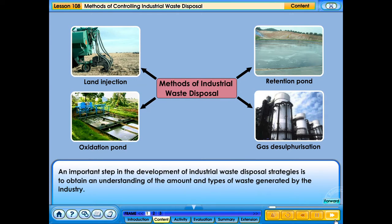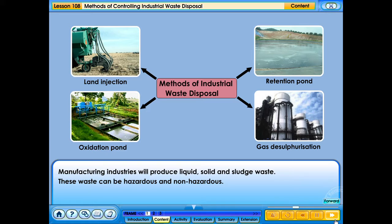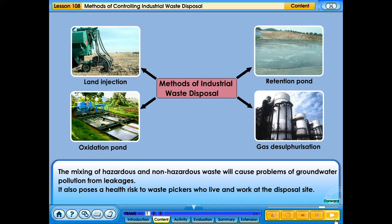An important step in the development of industrial waste disposal strategies is to obtain an understanding of the amount and types of waste generated by the industry. Manufacturing industries will produce liquid, solid and sludge wastes. These wastes can be hazardous and non-hazardous and should not be mixed together with domestic waste at disposal sites. The mixing of hazardous and non-hazardous waste will cause problems of groundwater pollution from leakage. It also poses a health risk to waste pickers who live and work at the disposal site.